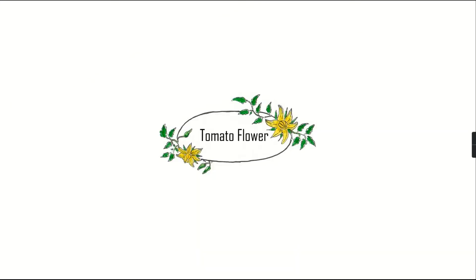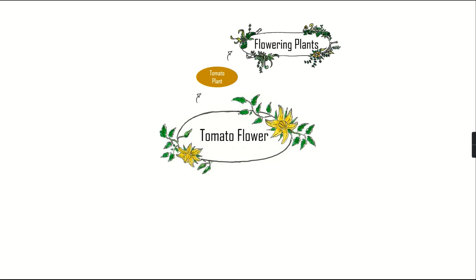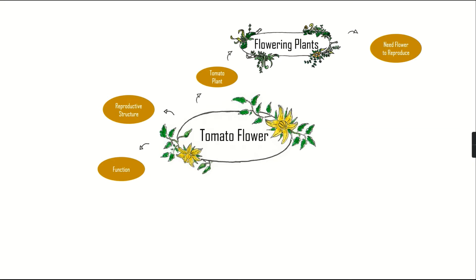Let's start with a quick overview of what a tomato flower is. The tomato flower is a part of the tomato plant, which itself belongs to the group of plants called flowering plants. Flowering plants need flowers to reproduce — flowers are their reproductive structures. So the tomato flower is the reproductive structure of the tomato plant, and its function is reproduction by the production of seeds.